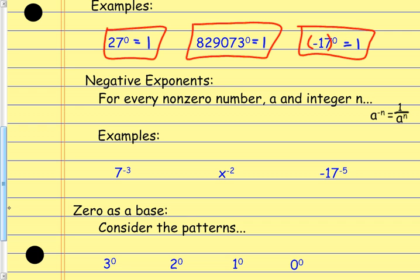In terms of negative exponents, for every non-zero number a and integer n used as the exponent, if I have a to the negative nth power, I'm going to rewrite that as 1 over a to the nth power. It makes us flip to the other side of the fraction bar and causes the exponent to become positive. So 7 to the negative third power can be rewritten as 1 over 7 to the third power.